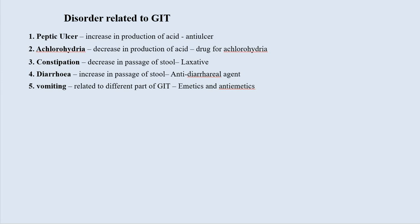Last one is vomiting, related to different parts of the GIT, and the drugs used to treat vomiting are known as emetics and anti-emetics. The first two disorders — peptic ulcer and achlorhydria — are related to the stomach. Constipation and diarrhea are related to the small intestine and large intestine. And vomiting is related to different parts of the GIT.